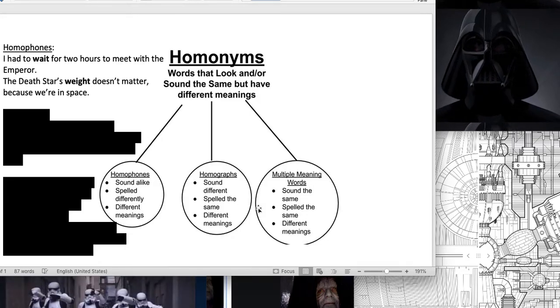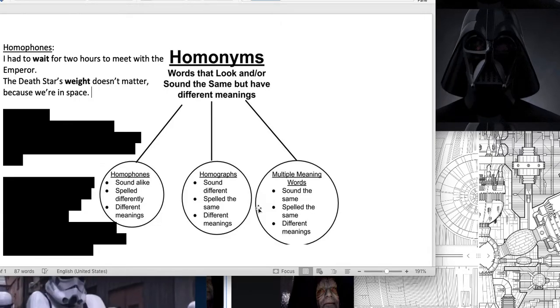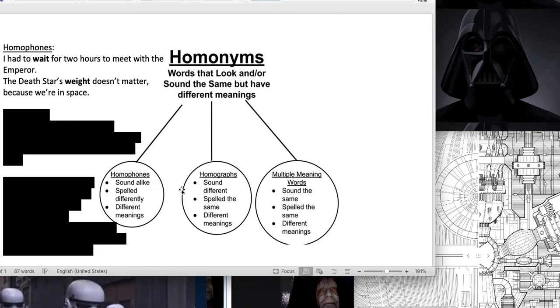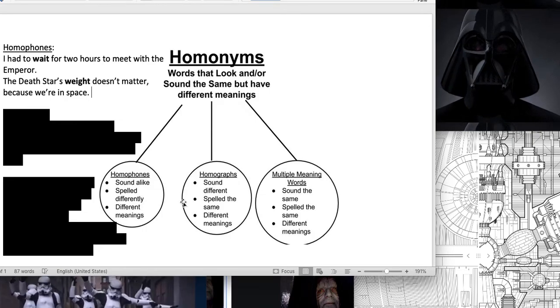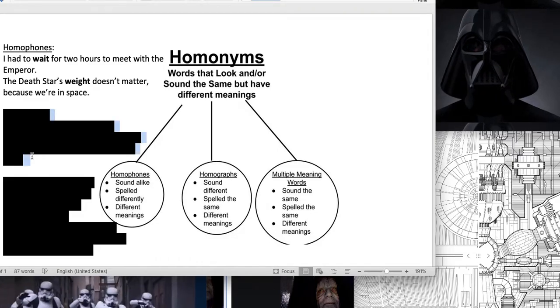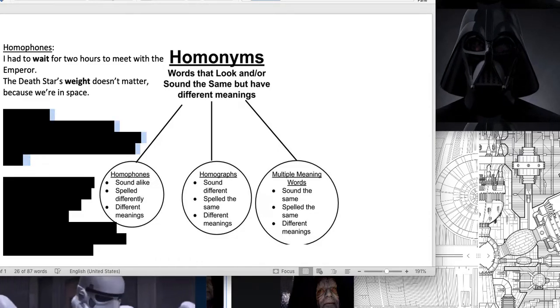The next kind of homonyms I want to talk about are homographs. Homographs sound different, they're spelled the same, and they have different meanings. Let's look at these examples.